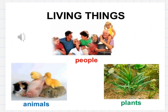Now let's start talking about living things. Living things just like people. Repeat after me: people, plants, animals. So we have three examples for living things: people, plants, and animals.